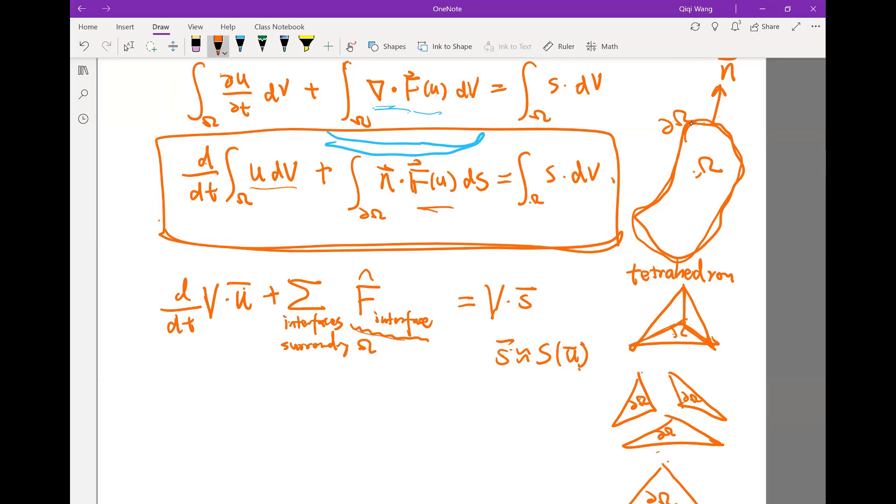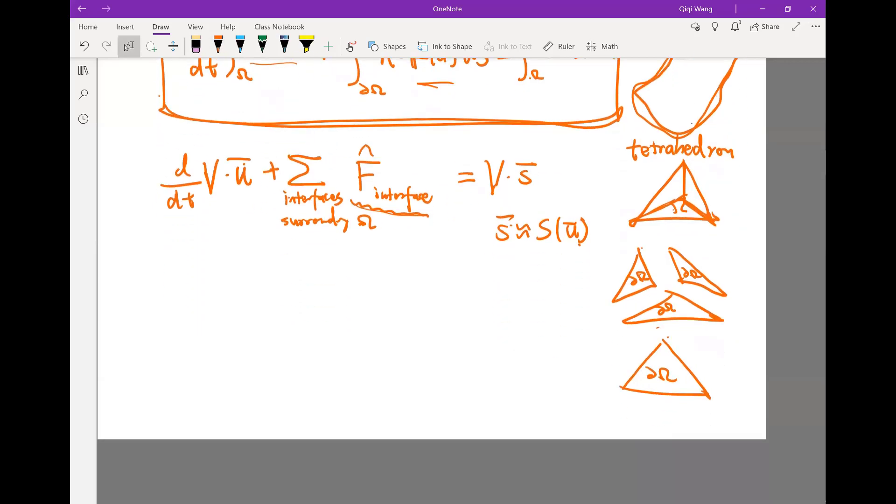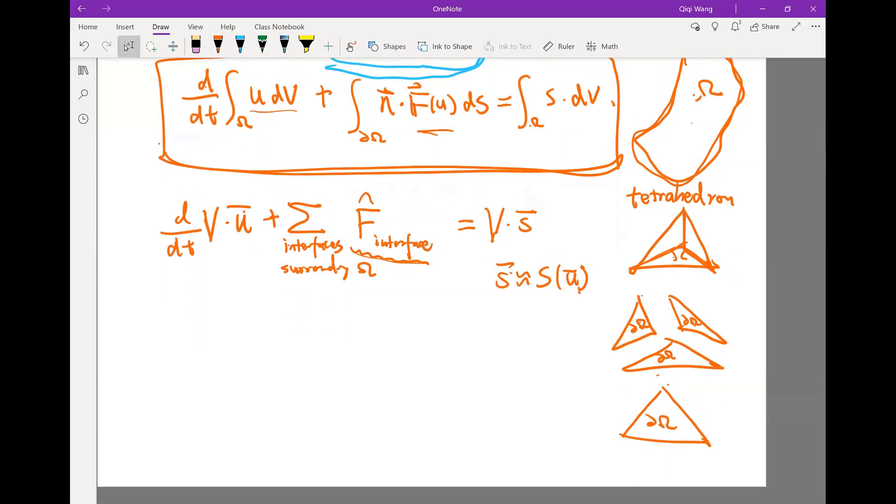And this interface flux for scalar equations, it's actually pretty simple. You can either just take the average or take the upwind. For a general equation, there is actually a pretty complicated way, and different for different equation, of computing the interface flux. And the terminology for computing the interface flux is called the Riemann solver.